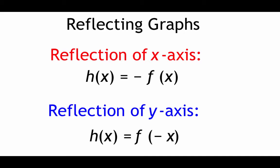The last type of transformation in this video is reflections. There are two types: an x-axis reflection, which happens by placing a negative out in front of one of our parent functions; and a y-axis reflection, which happens by placing a negative inside the parentheses on our x.